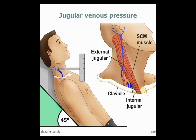We have the external jugular vein and the internal jugular vein, which arises from the two heads of the sternocleidomastoid. The patient is placed at 45 degrees. Usually we depend on the internal jugular rather than the external jugular, so we use the right internal jugular vein for the estimation of the jugular venous pressure.